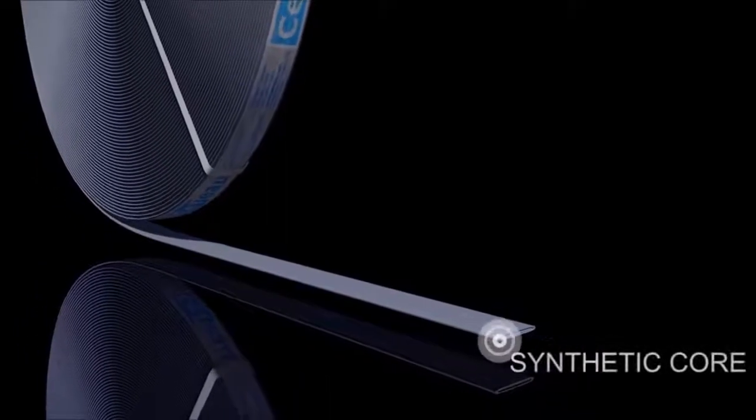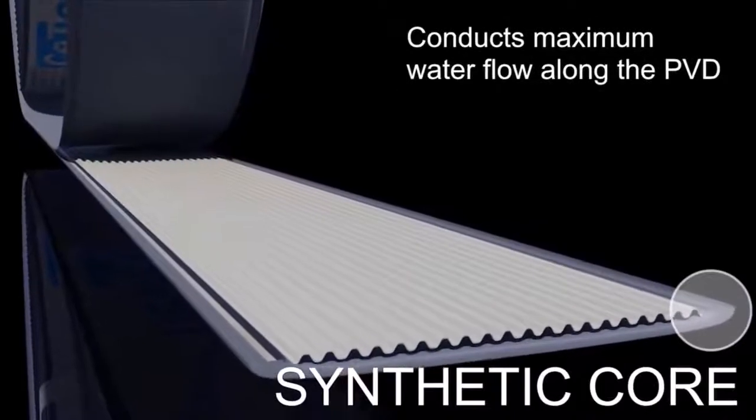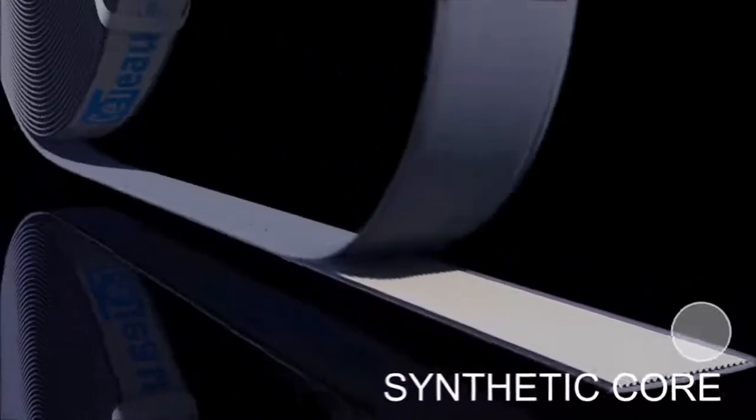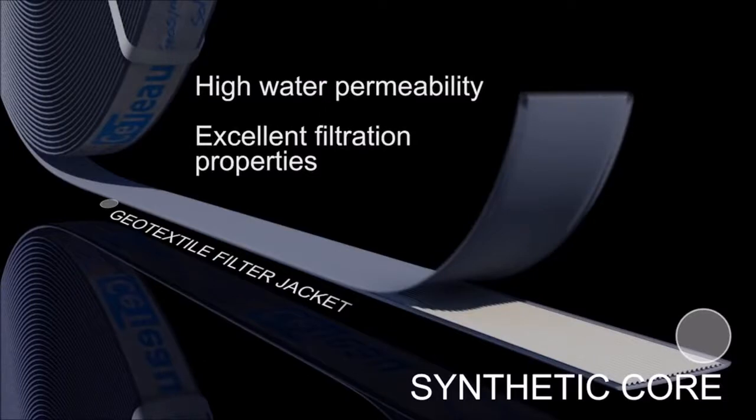Prefabricated vertical drains consist of a specially designed synthetic core which conducts maximum water flow along the length of the drain. The core is fully wrapped in a durable geotextile filter jacket that has very high water permeability and excellent filtration properties.